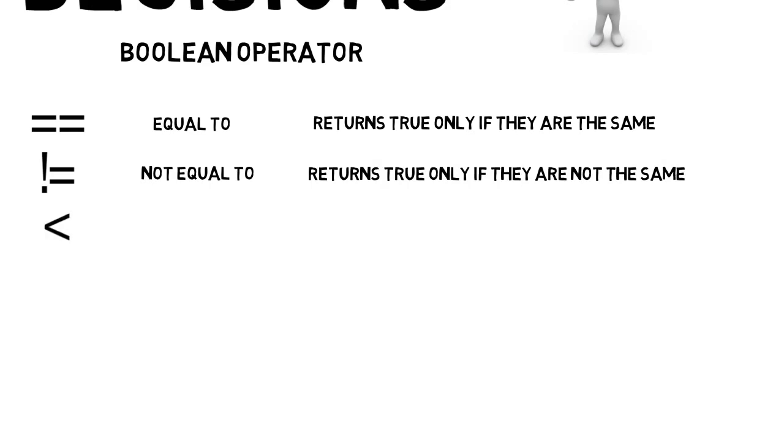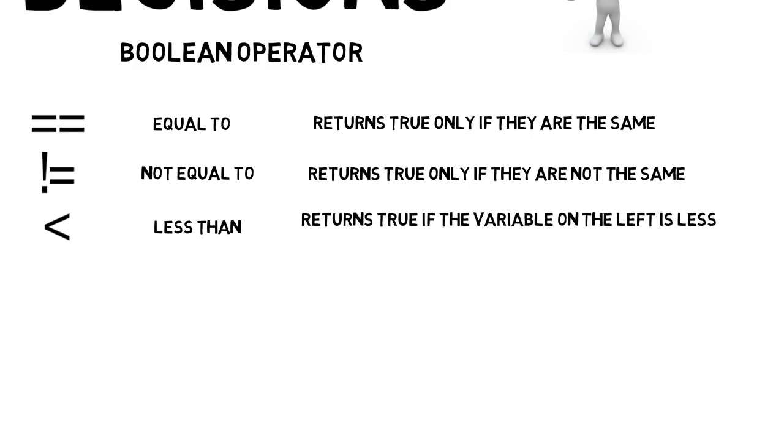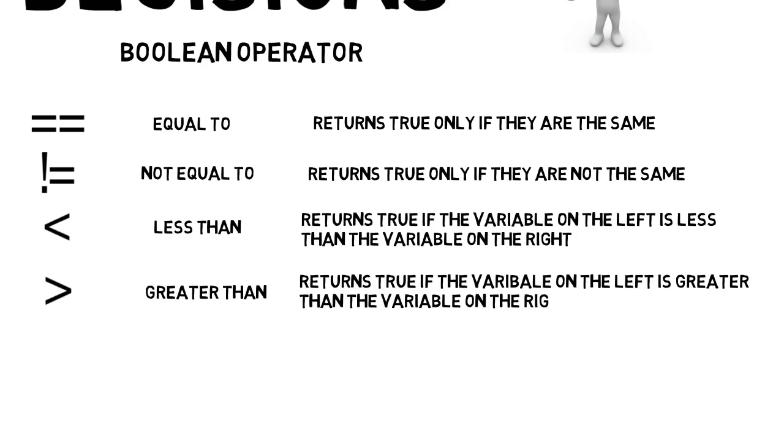The less than sign means less than, and will return true if the variable on the left is less than the variable on the right. The greater than sign means greater than, and will return true if the variable on the left is greater than the variable on the right.